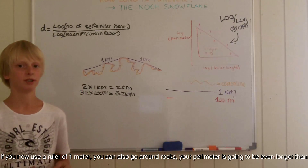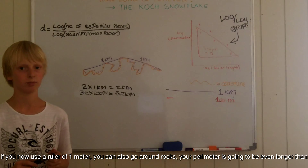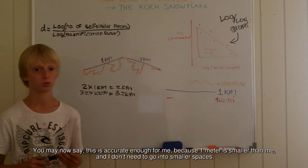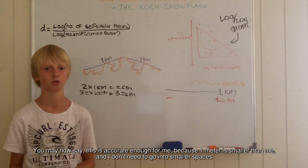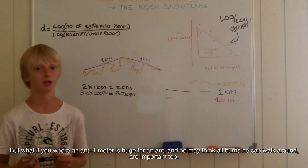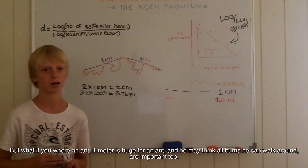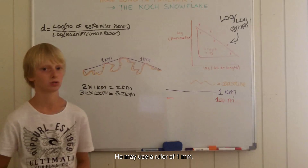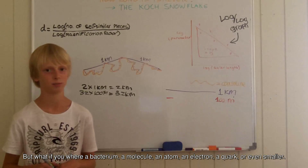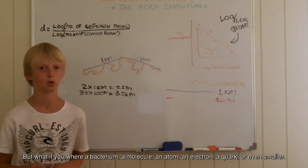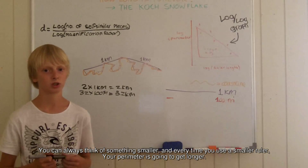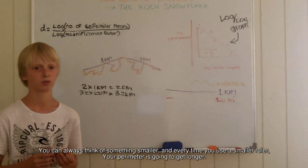If you now use a ruler of 1 meter, you can also go around drops, and your perimeter is going to be even longer than before. You may say this is accurate enough, because 1 meter is smaller than me, and I don't need to go into smaller spaces. But what if you were an ant? 1 meter is huge for an ant, and he may think that all small bumps that he can walk around are important too. He may use a ruler of 1 mm. But what if you were a bacterium, a molecule, an atom, an electron, a quark, or even smaller? You can always think of something smaller, and every time you use a smaller ruler, your perimeter is going to get longer.